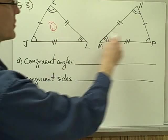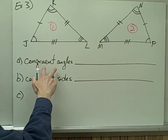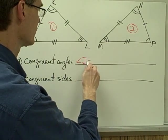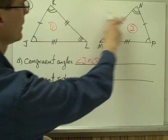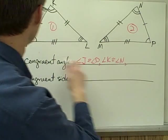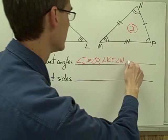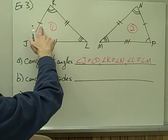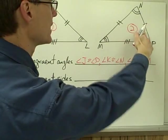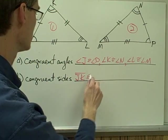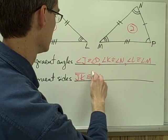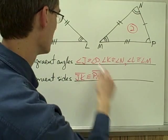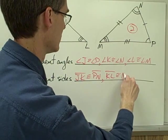Here's example number three — triangle number one and triangle number two. I want to write down all my congruent angles. Angle J and angle P — my first set of curved hash marks — angle J is congruent to angle P. Angle K and N are congruent. And my three curvy marks — angle L and angle M — angle L is congruent to angle M. Now my sides: single hash marks JK and PN — segment JK is congruent to segment PN. Double hash marks — segment KL is congruent to segment NM.